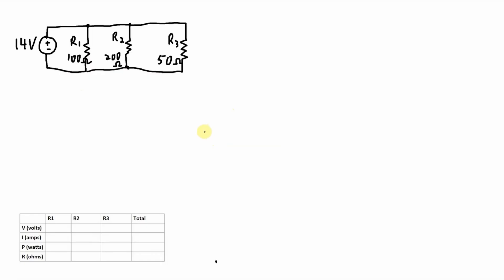Now here's a circuit with three resistors in parallel with a 14 volt source. I could reduce these three resistors to one equivalent resistance to help me fill in this table, but I don't actually have to do that because all these resistors are in parallel. What I do know, because they're in parallel, is all of the voltages will be equal.